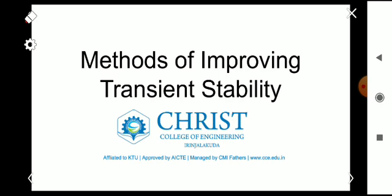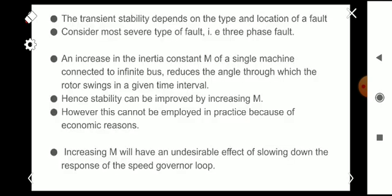The transient stability depends on the type and location of a fault. Consider the most severe type of fault, that is three-phase fault. In that case, an increase in the inertia constant M of a single machine connected to infinite bus reduces the angle through which the rotor swings in a given time interval.